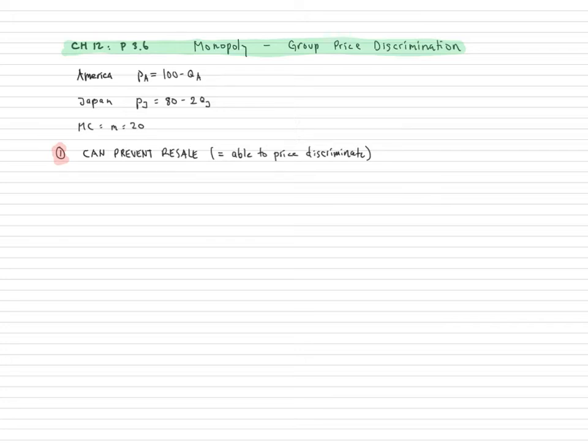So I have to solve the two markets separately. So here's America, doing it quickly here, so we know what the inverse demand function is. So I'm just going to write what the revenue function is. It's going to be 100 times QA minus QA squared. That is, it's price times quantity. And then I'm going to find the marginal revenue for America.